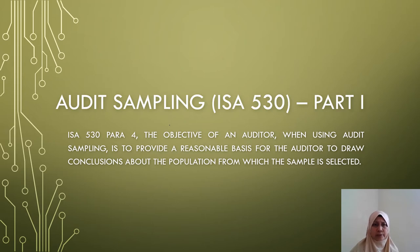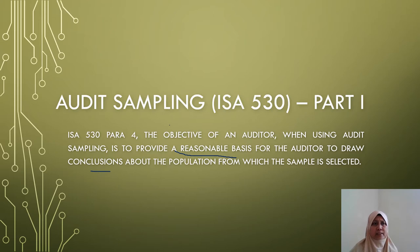We need to refer to RSA 530. The objective of an auditor when using audit sampling is to provide a reasonable basis for the auditor to draw conclusions about the population from which the sample is selected.